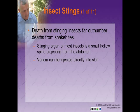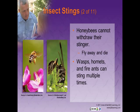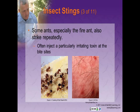Death from stinging insects far outnumbers deaths from snake bites. The stinging organ of most insects is a small hollow spine projecting from the abdomen, and venom can be injected through this spine directly into the skin. Honeybees cannot withdraw their stinger; the honeybee flies away and dies, but the implanted stinger remains and keeps delivering toxin. Because they fly away, it is difficult to identify which species is responsible. Wasps, hornets, and fire ants can sting multiple times and do not die after stinging. Some ants, especially the fire ant, also strike repeatedly, often injecting a particularly irritating toxin at the bite sites.